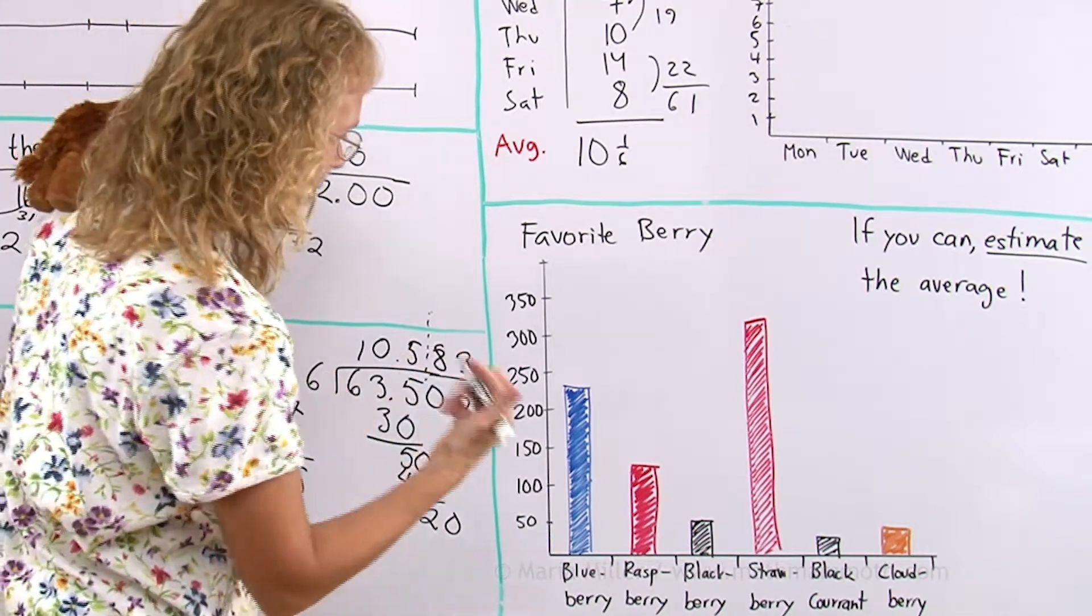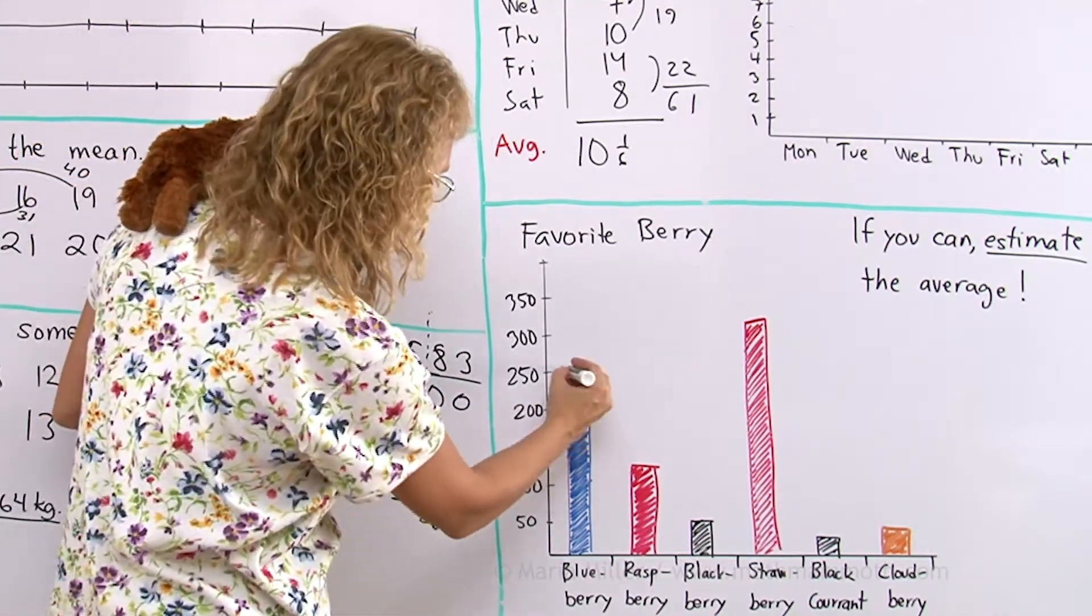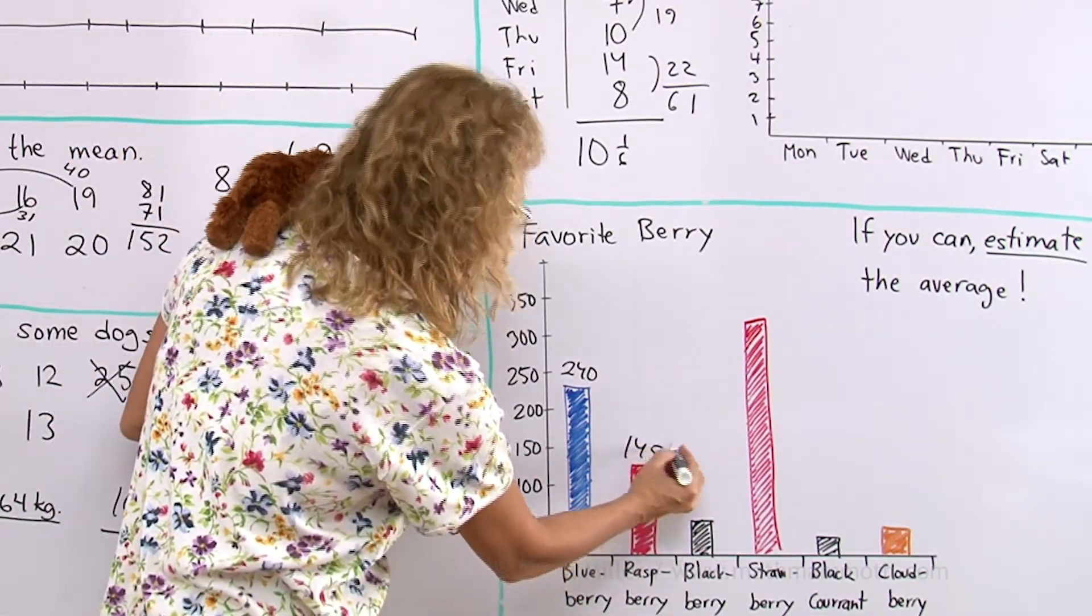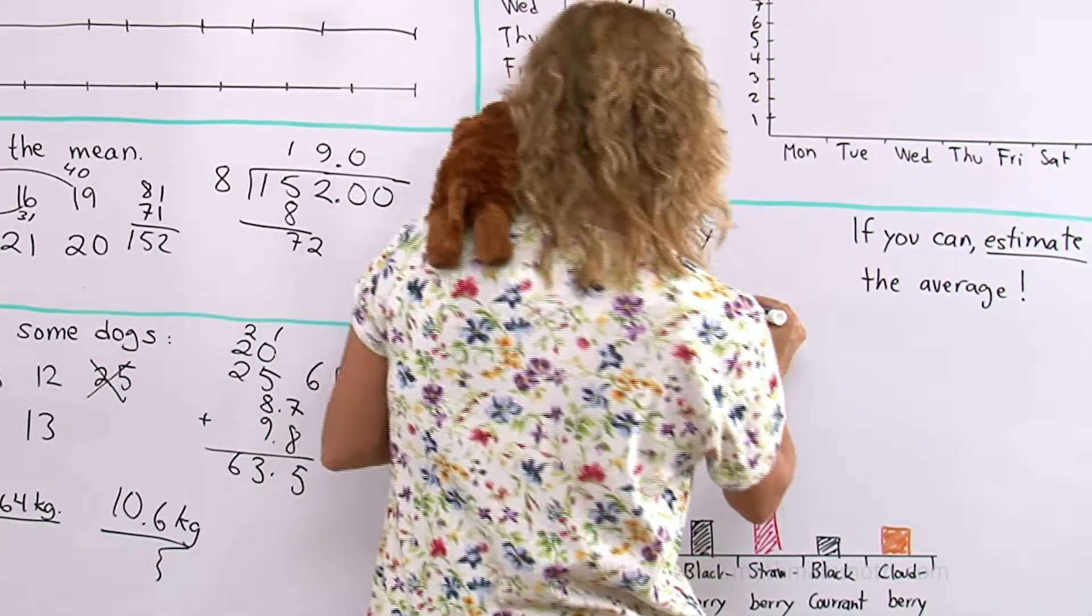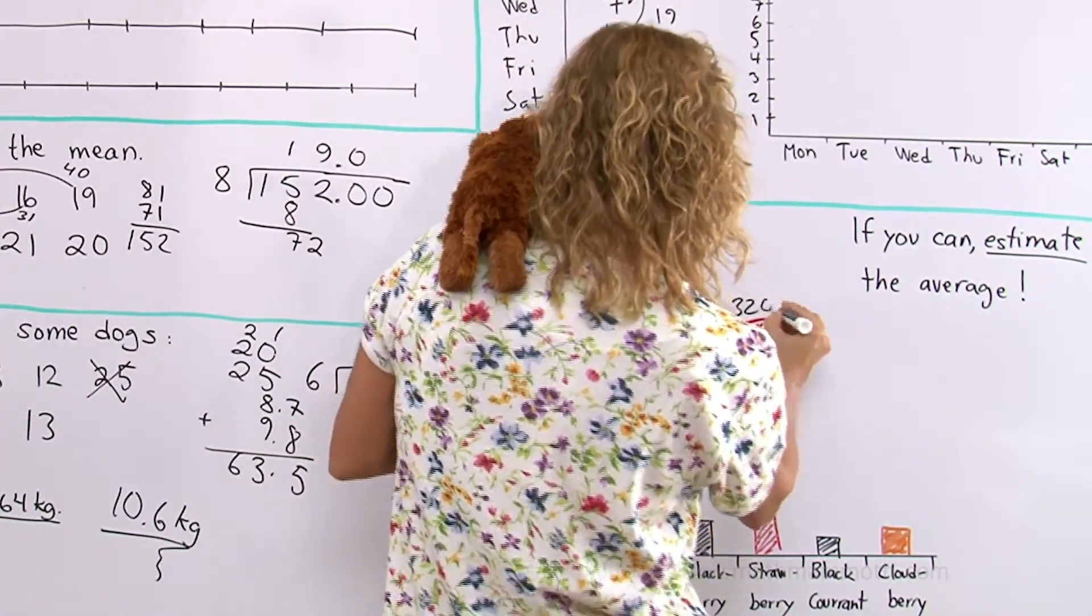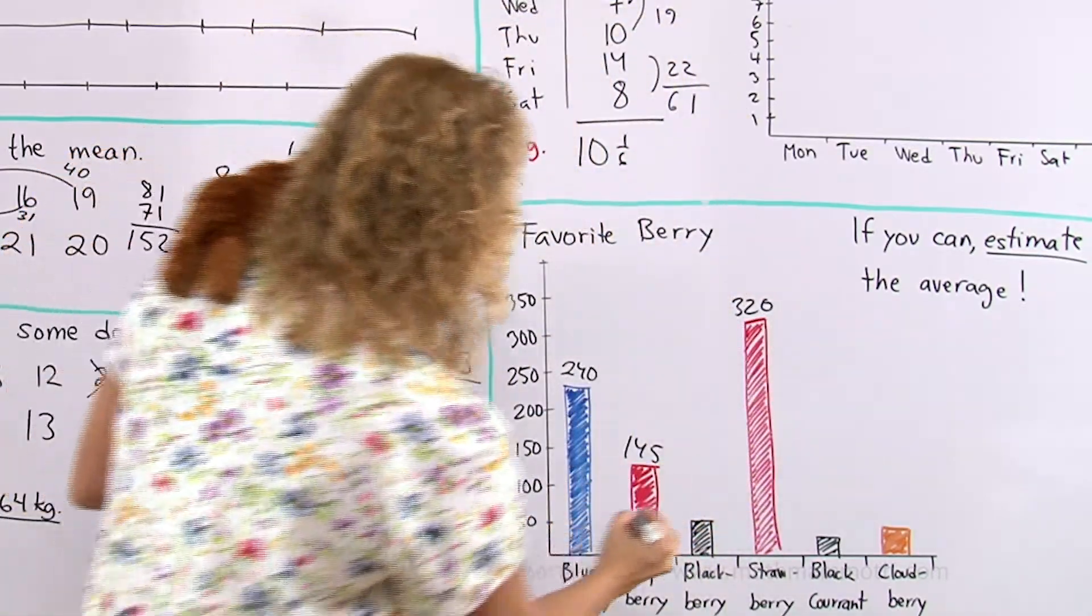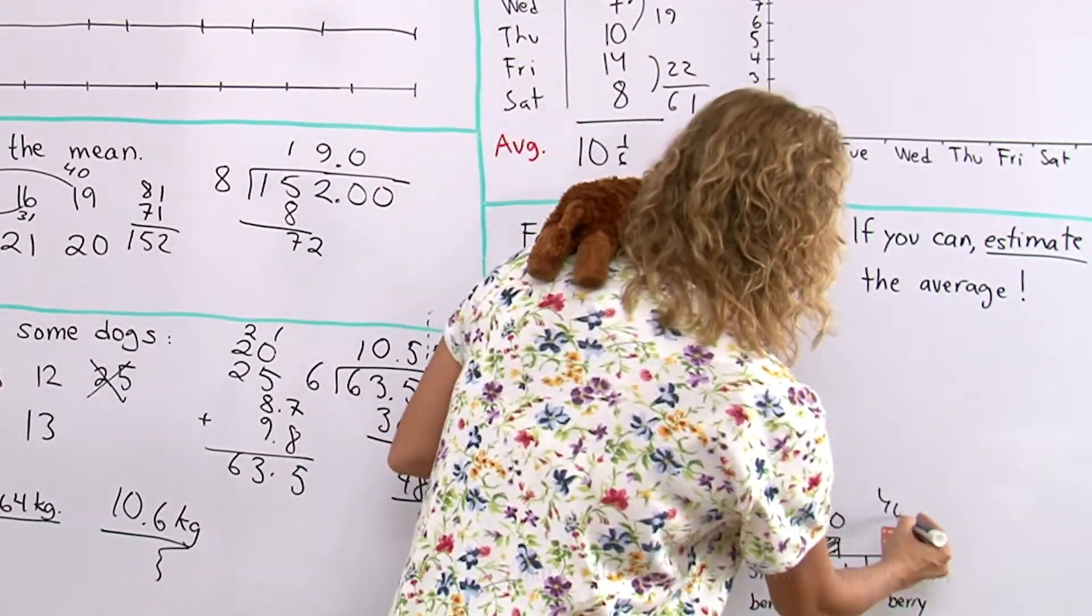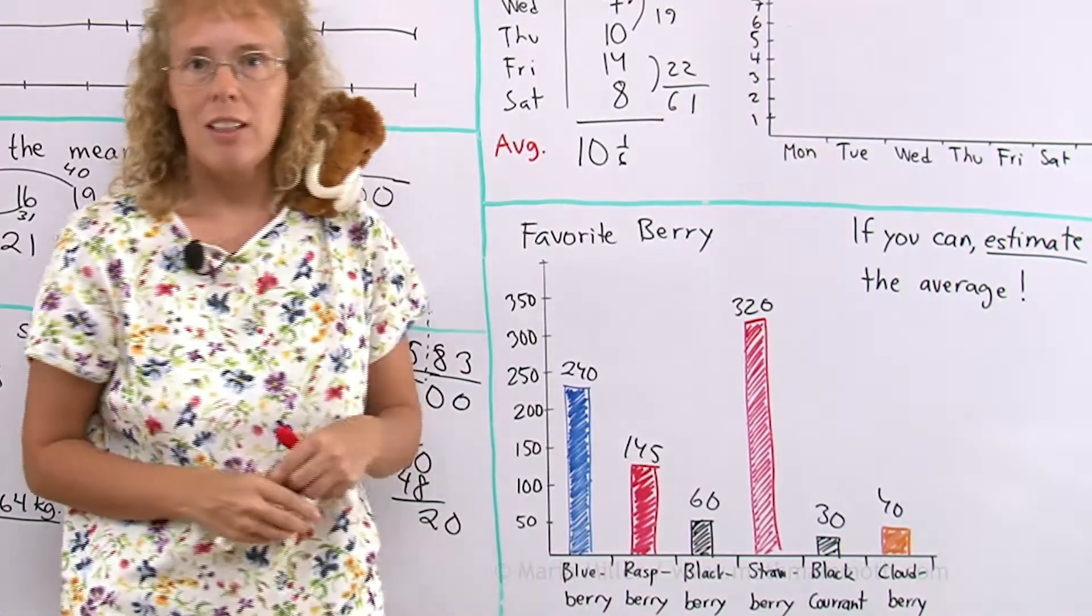Let's say I would start by estimating however many people there are. Maybe there's 240 here. Then the raspberry peoples are 145. I'm just estimating here roughly 320 and what would that be? 60 maybe? And 30 and 40? I don't know. Then could you calculate the average?